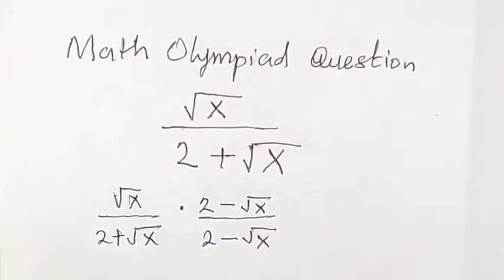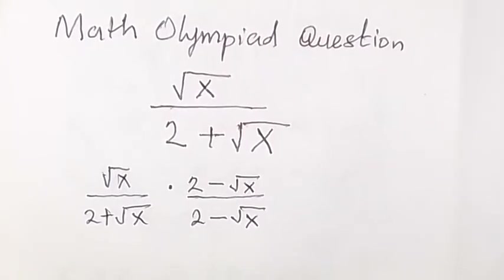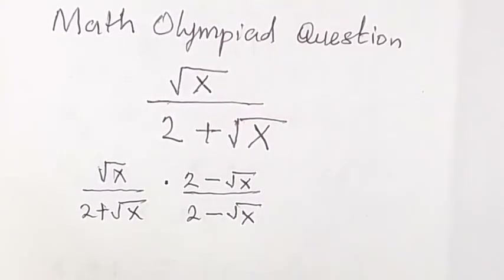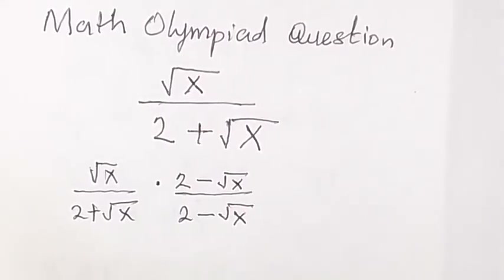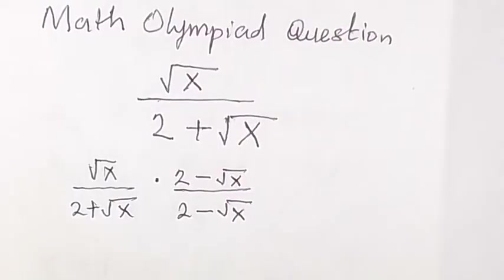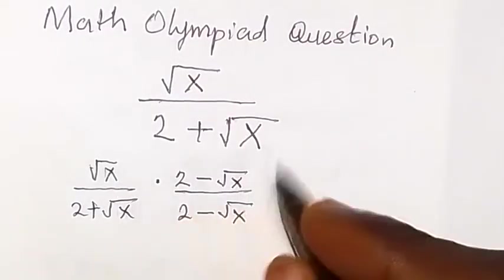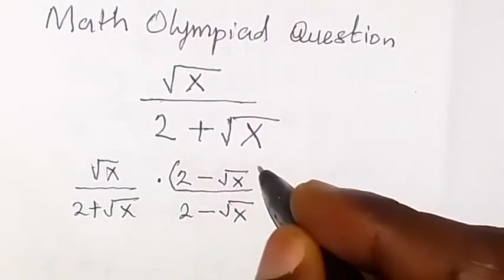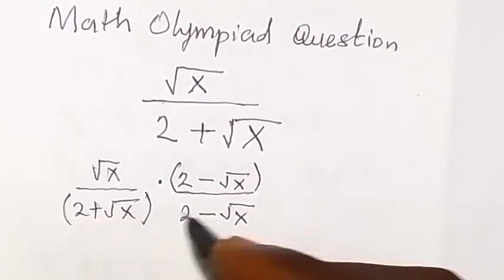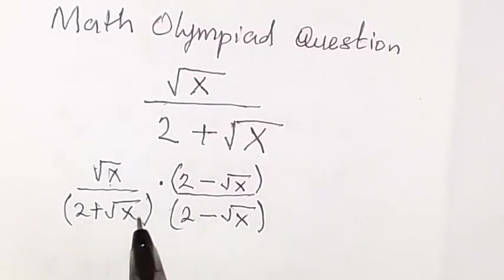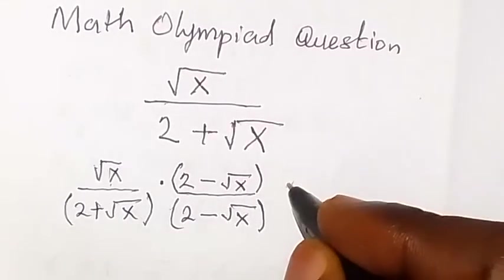So what we call here is rationalizing the denominator. We try to remove the surd form in the denominator. From there, we are going to multiply directly like this. We have it in brackets and also this way whereby the two brackets will open. So what we have will become